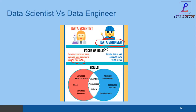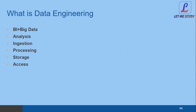Data engineer is the backbone of the entire data science project — without the data engineer, there is no data science project. At a high level, the data engineer does BI plus big data — applying business rules on the big data. He analyzes, ingests, processes, stores, and takes care of access — giving the right access to the right amount of data to the right people. Big data is data which is huge in volume and spread across multiple sources and formats.